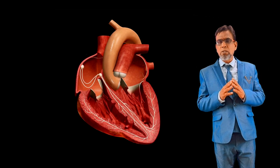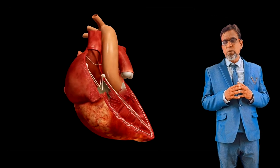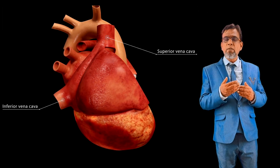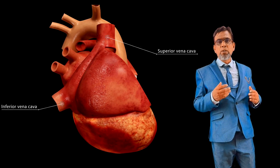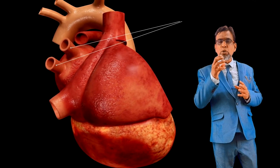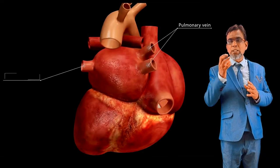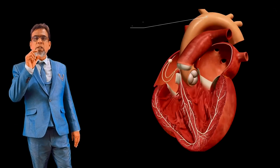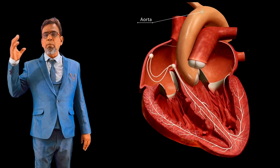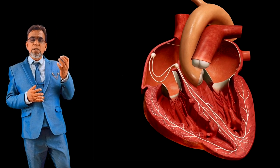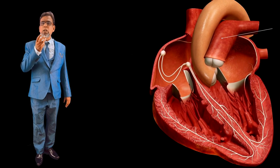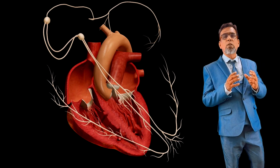Regarding blood vessels to and from the heart: the right atrium receives deoxygenated blood from the inferior vena cava, coming from the lower parts of the body, and the superior vena cava, coming from the upper parts of the body. The left auricle receives oxygenated blood through four pulmonary veins, which bring oxygenated blood from the lungs. The aorta, the largest blood vessel in the human body, carries oxygenated blood from the left ventricle and supplies it to all parts of the body. The pulmonary artery carries deoxygenated blood from the right ventricle to the lungs.